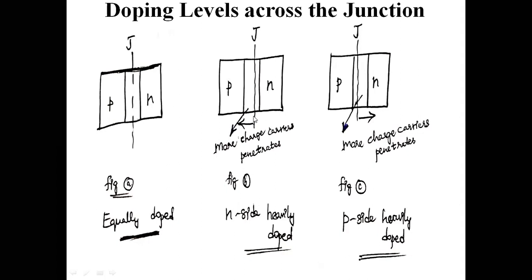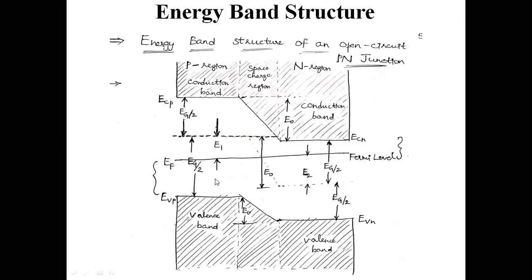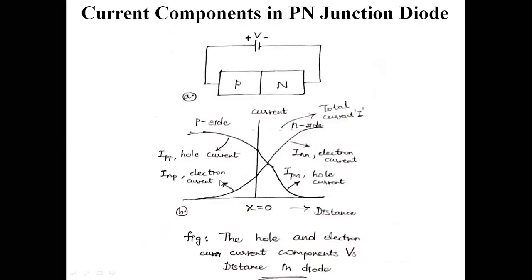If n side is heavily doped, more charge carriers penetrate across the p-type semiconductor material. The concentration — more number of charge carriers — accumulates and penetrates across the p-type semiconductor material. It depends upon the doping levels: the penetration goes in the reverse direction in p-type and n-type semiconductor material. This concept we will see in tomorrow's class.